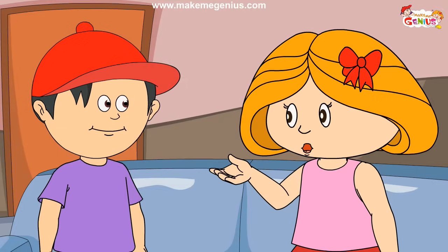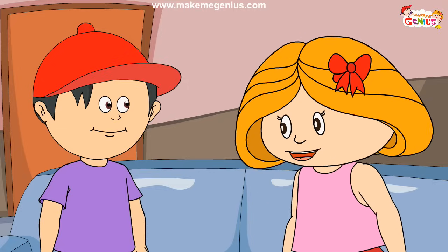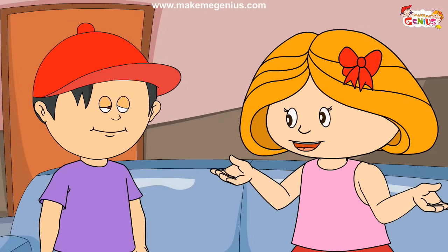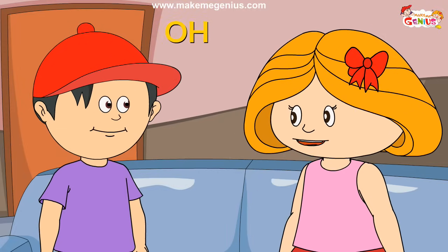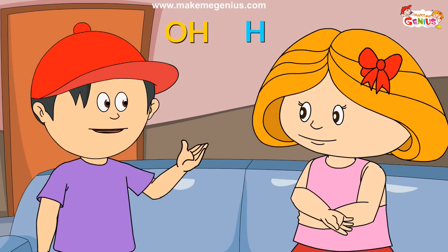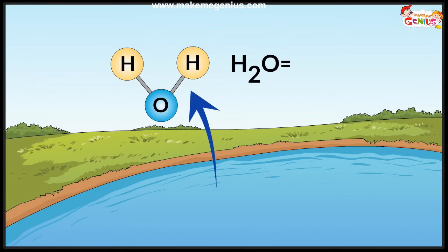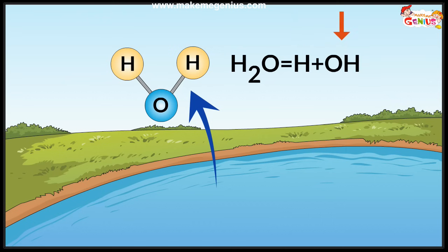And do you know that a water molecule may be broken into parts, each with one OH and one H element? The remaining H is known as the hydronium ion, and OH is known as the hydroxide ion. So H is the hydronium ion, and OH is the hydroxide ion.